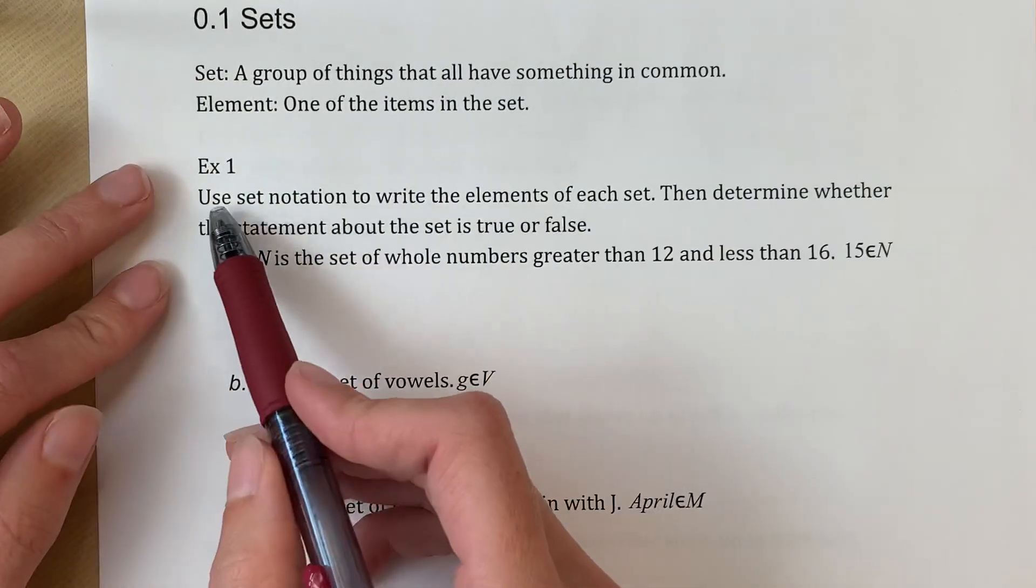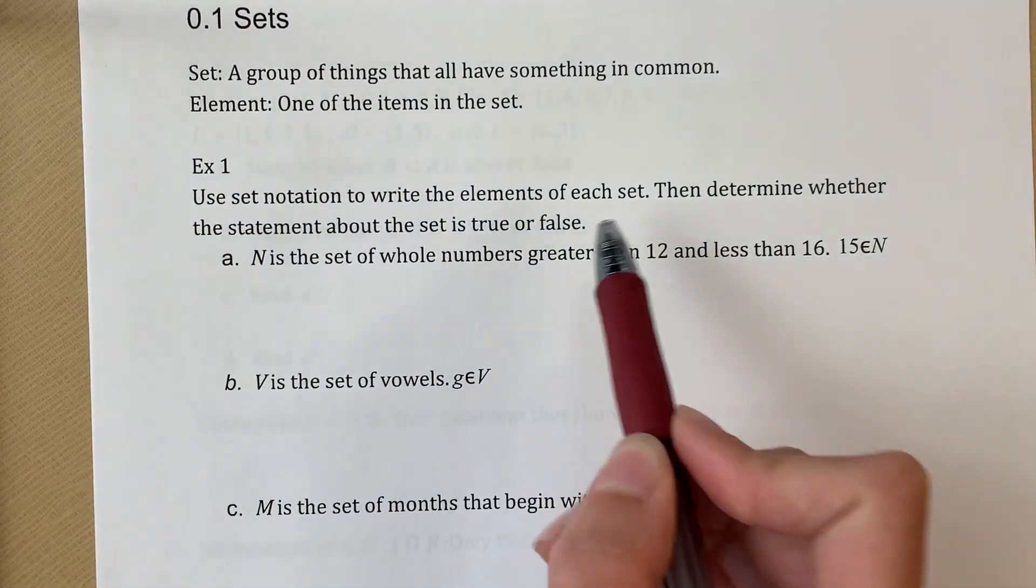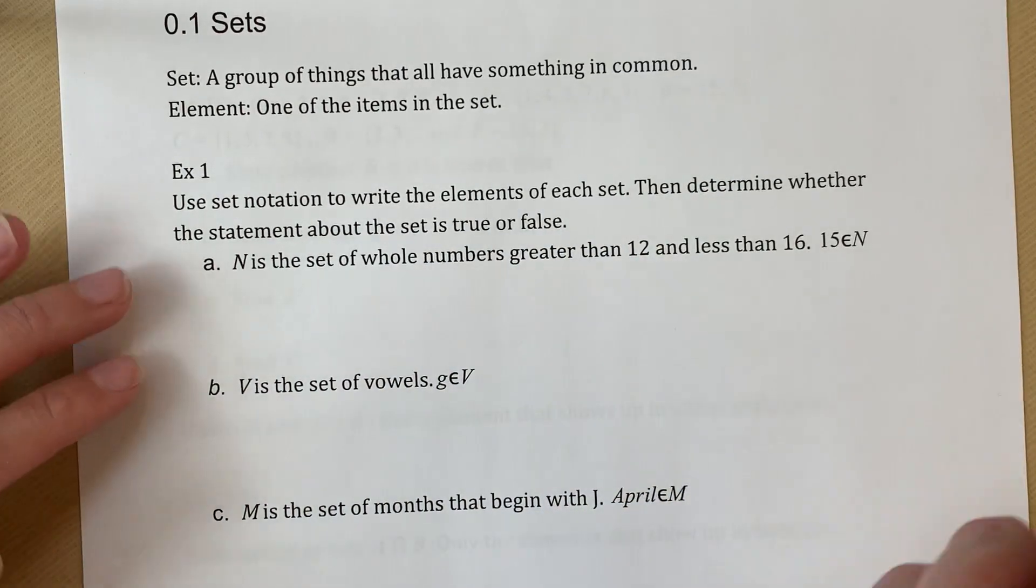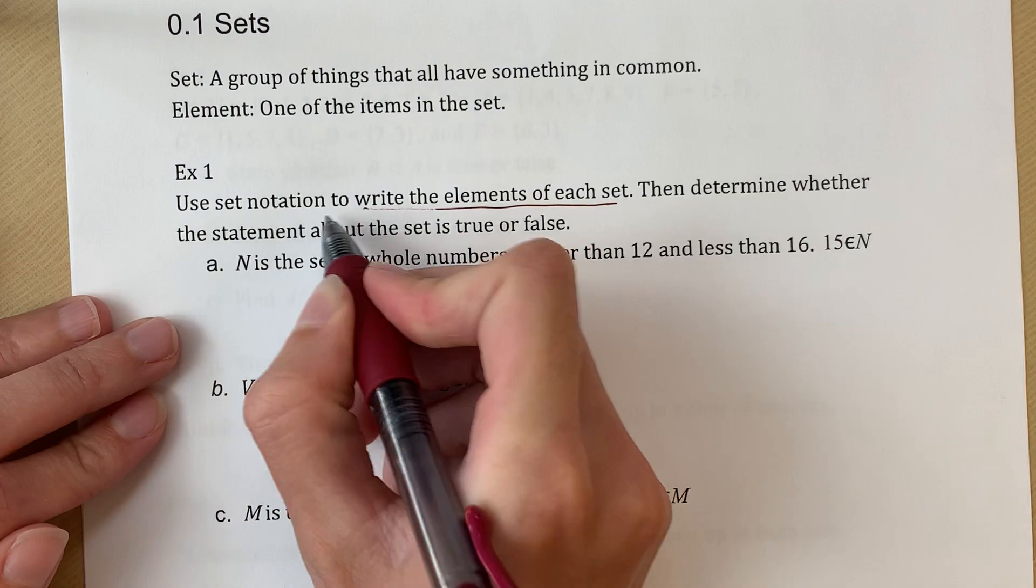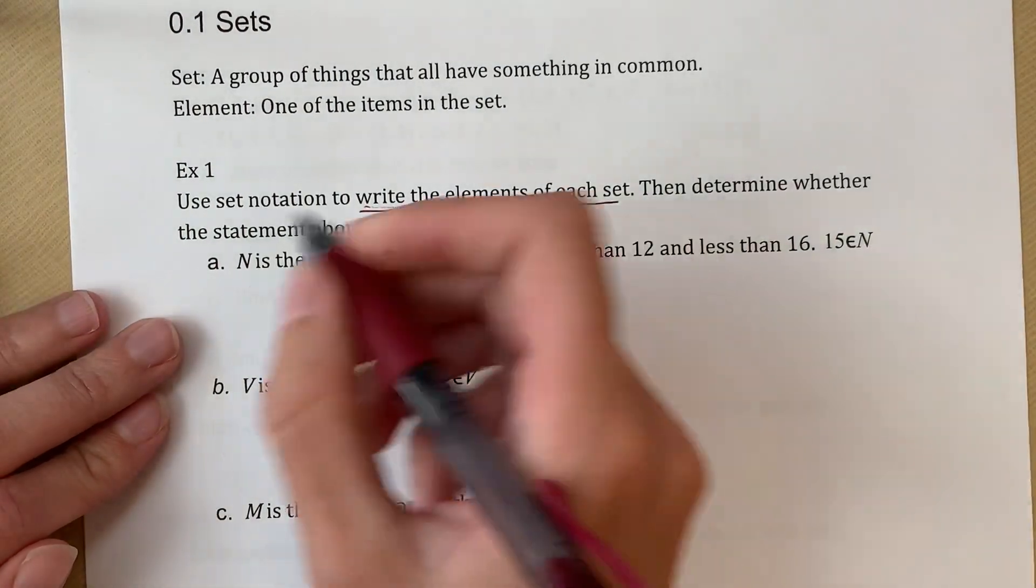So example one is going to say, use set notation to write elements of each set, then determine whether the statement about the set is true or false. So there's two parts here. We have the part that is to write the elements of each set using proper notation, and determine if it's true or false.